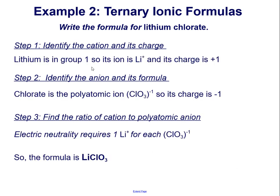Lithium is in group 1, so its ion is Li+, and its charge is positive 1. Chlorate is the polyatomic ion ClO3, and its charge is negative 1. Electric neutrality requires one lithium positive ion for each chlorate negative polyatomic ion. So the formula is LiClO3.